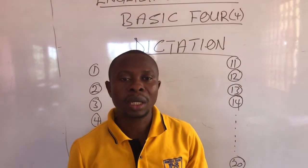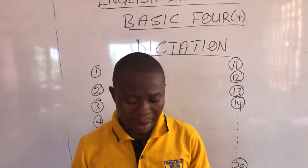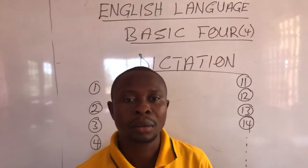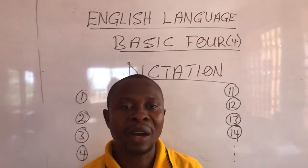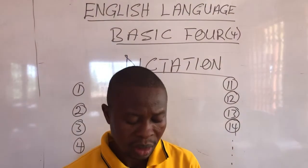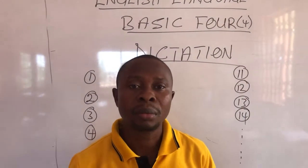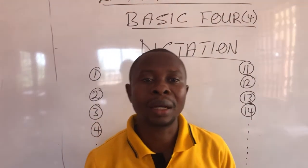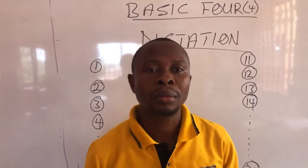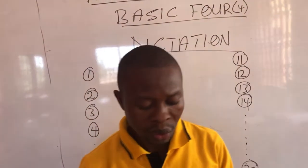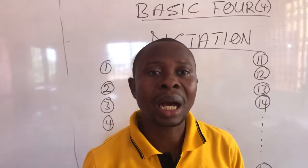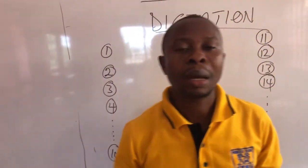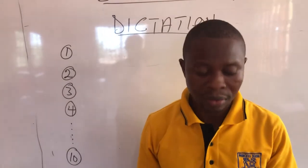Okay, let's continue. Number 11, we have advance. Advance. Number 12, ancestor. Ancestor. Number 13, captive. Number 13, captive.